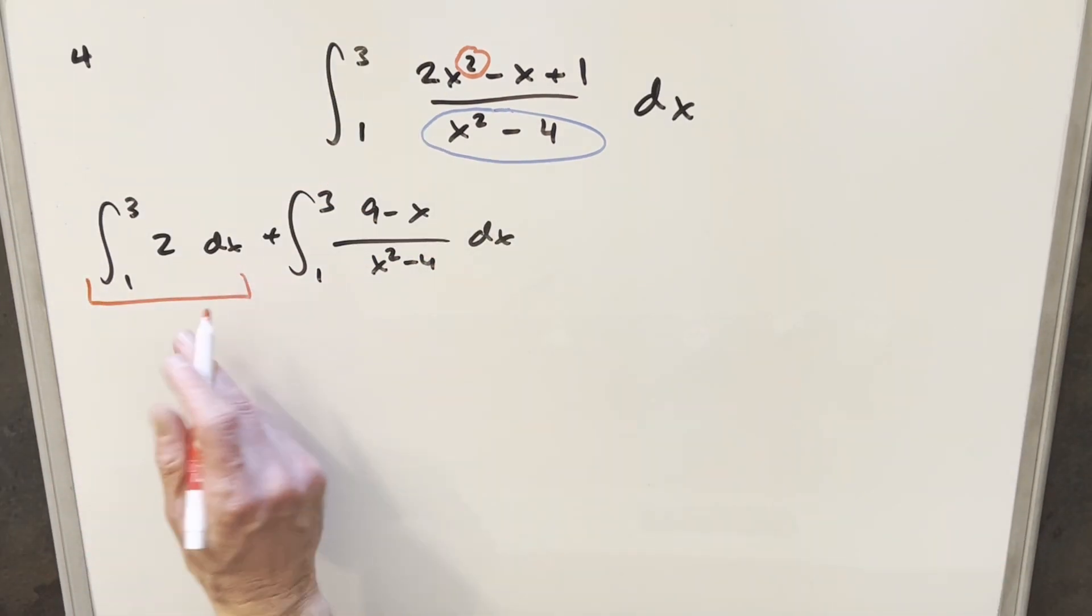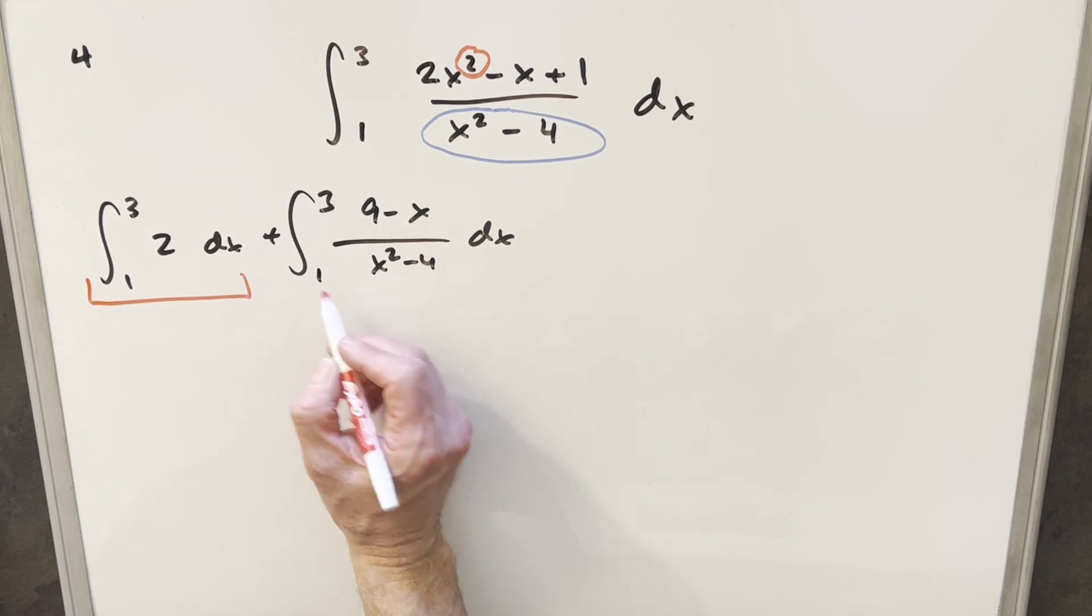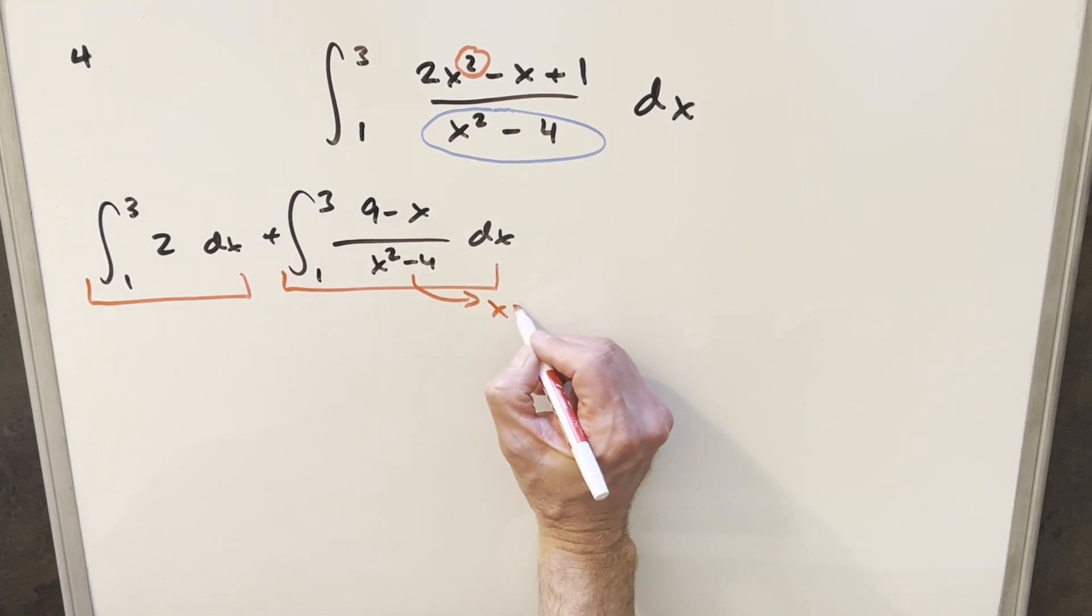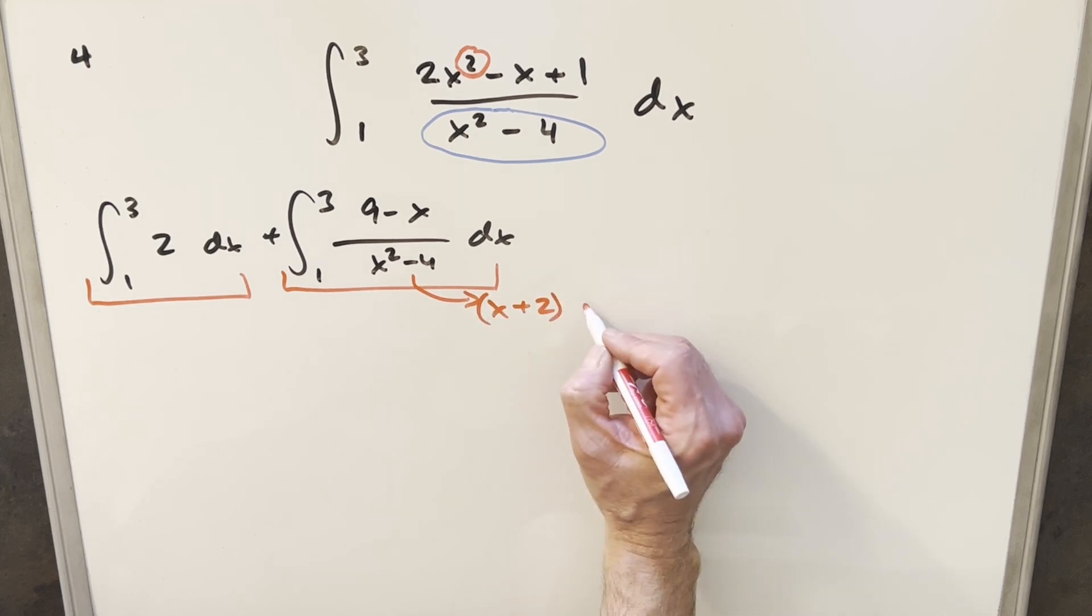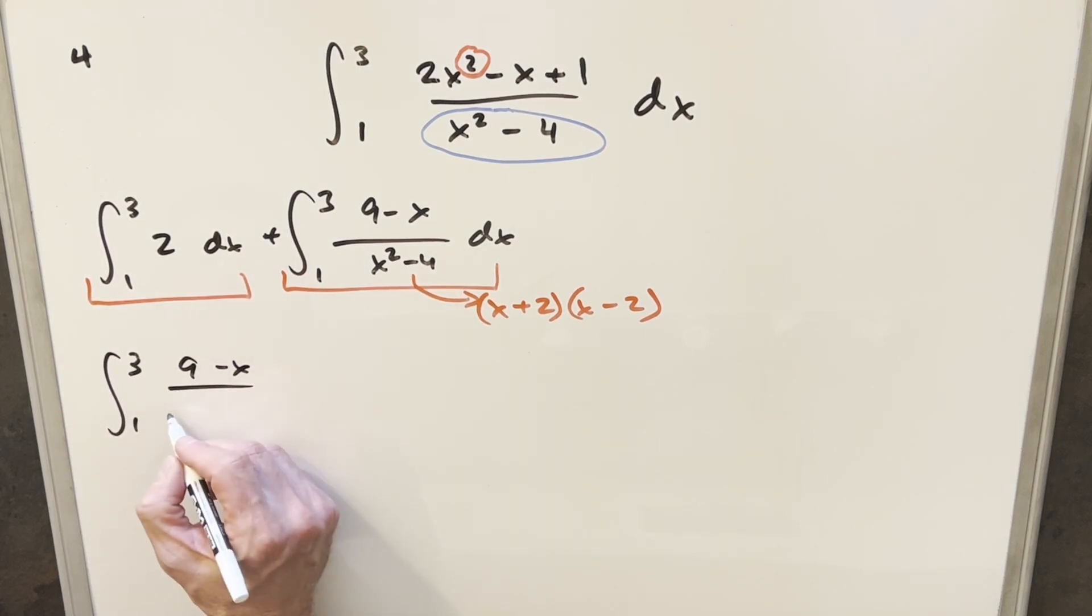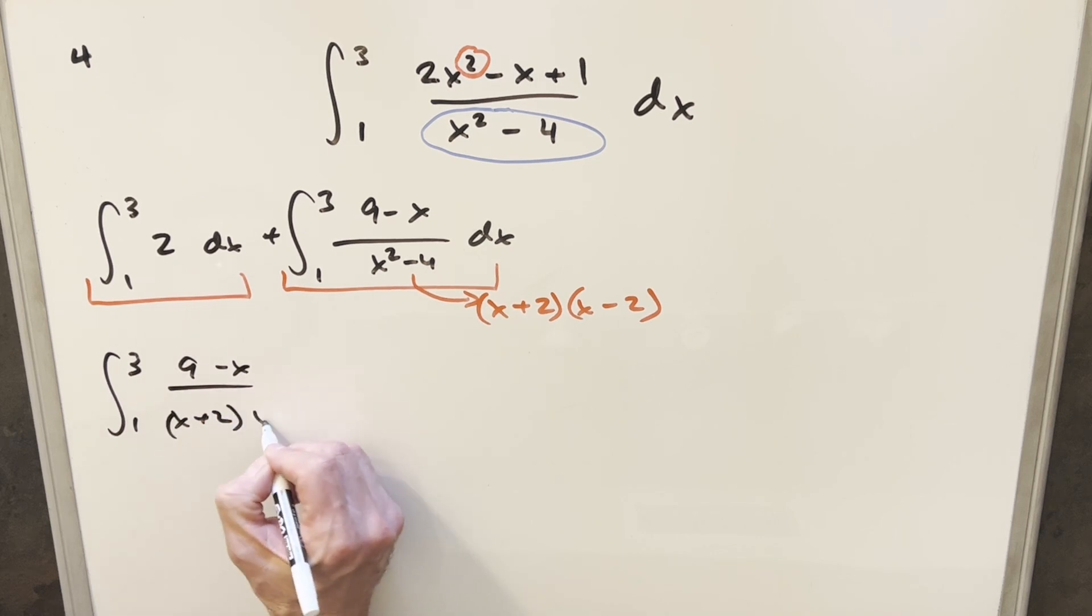So of course, I'm not concerned with this part because this is going to be easy. But for this one, let's just work on this second integral. And for x squared minus four, I can factor that. I can write that as x plus two times x minus two. And so coming down here, if we rewrite this, just dealing with our second integral, nine minus x over x plus two, x minus two, what I'd like to do with this is partial fractions.